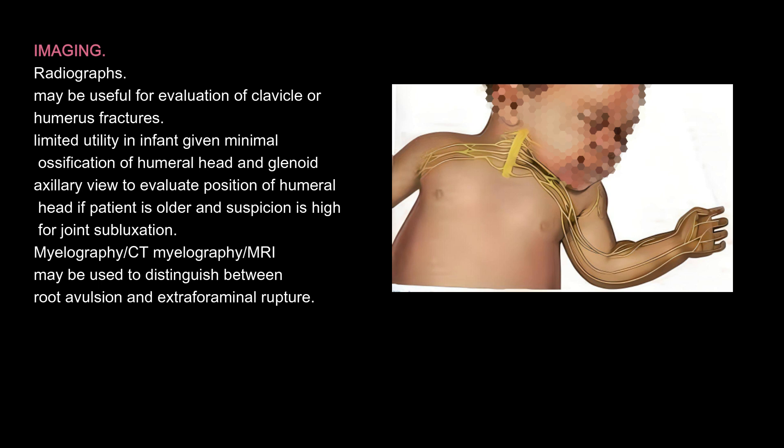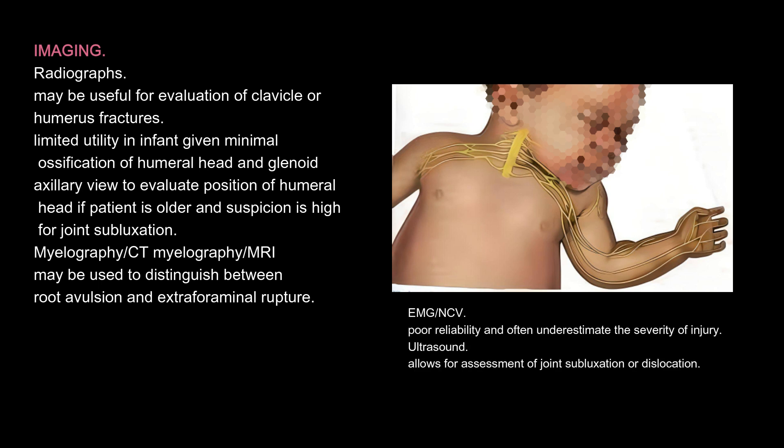Imaging: Radiographs may be useful for evaluation of clavicle or humerus fractures, but have limited utility in infants given minimal ossification of the humeral head and glenoid; axillary view can evaluate position of the humeral head if the patient is older and suspicion is high for joint subluxation. CT myelography or MRI may be used to distinguish between root avulsion and extraforaminal rupture. EMG/NCV has poor reliability and often underestimates severity of injury. Ultrasound allows for assessment of joint subluxation or dislocation.